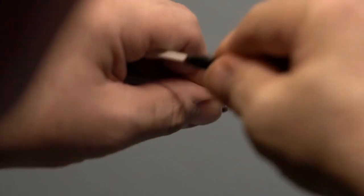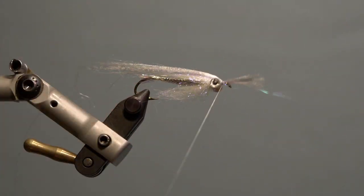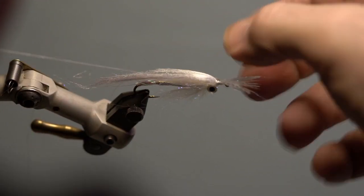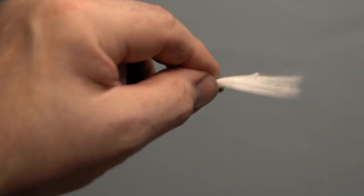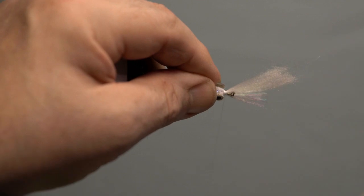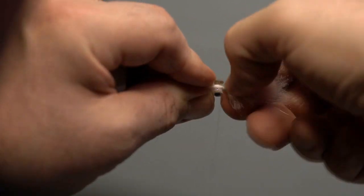Secure and whip finish. Add your next portion of white polar fiber wing under the hook in front of the eyes. Secure and whip finish.